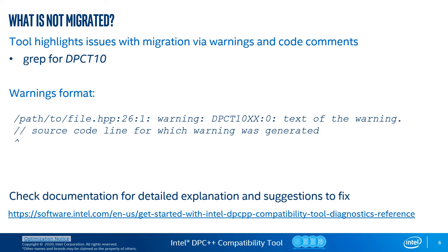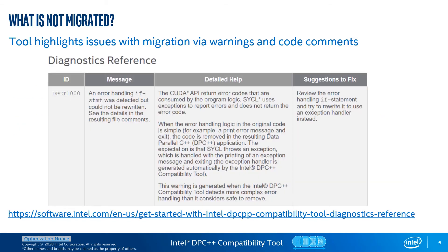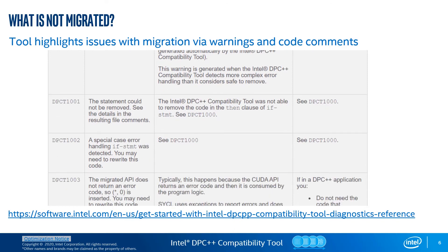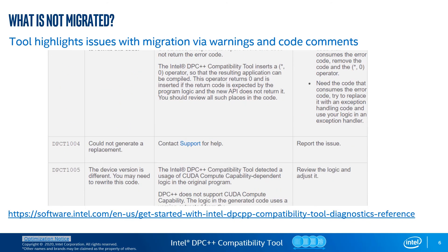When additional effort is required to complete the migration, the tool produces a corresponding warning and also adds comments into the code. Use grep in the generated source files for "DPCT" to find comments inserted by the tool. Warnings may look like the examples shown. You may find a clear description of a detected issue in the documentation and get an actionable suggestion. At this moment there are 35 different warnings generated by the tool.